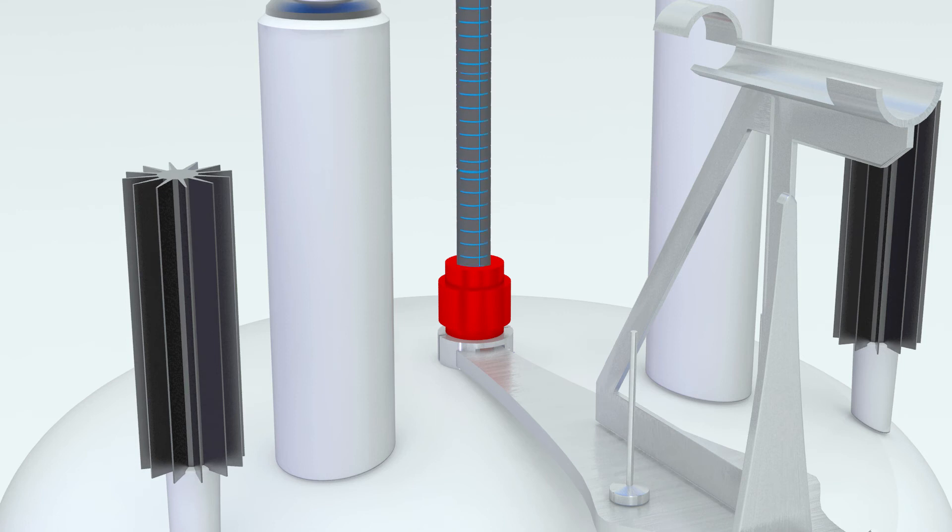Simply lift the flow tube assembly and the transfer lines and secure to a clamp stand.